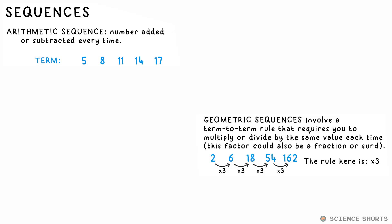A geometric sequence is one where we multiply or divide by a number each time instead.